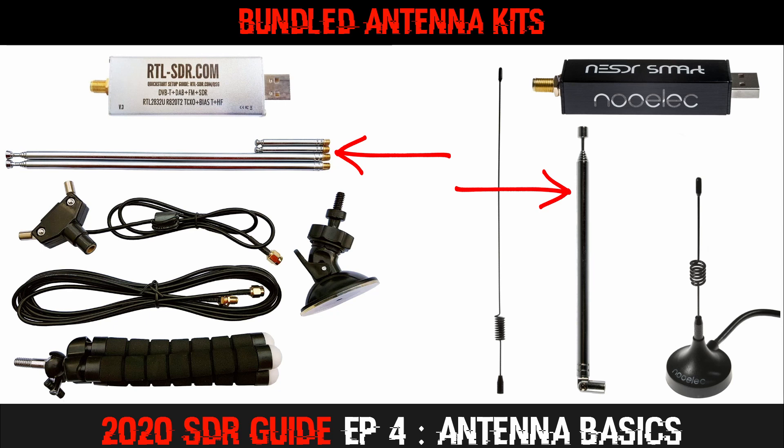You adjust the length of the telescopic whip in order to get best reception. In the case of the RTL bundle you use two out of the four whips to make a simple dipole antenna. The NuELEC telescopic whip is used to make a quarter wave mag mount antenna — this is the antenna you'll probably use most from the kit. The other two are fixed frequency antennas which are less versatile and are best used on the frequency they are tuned for.